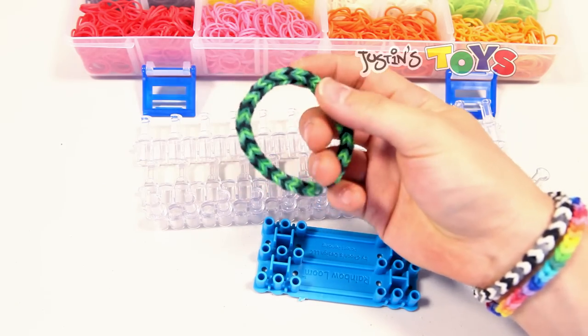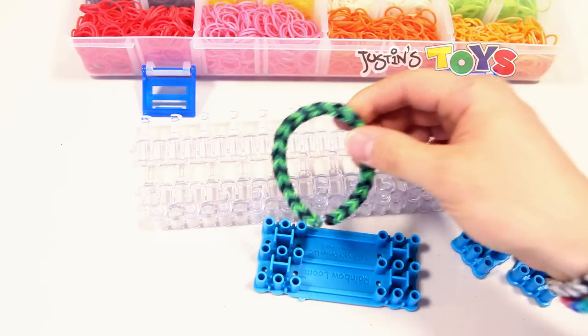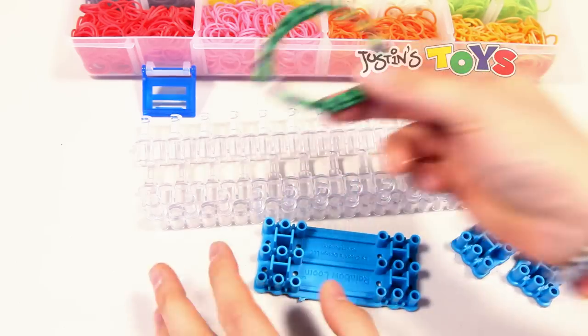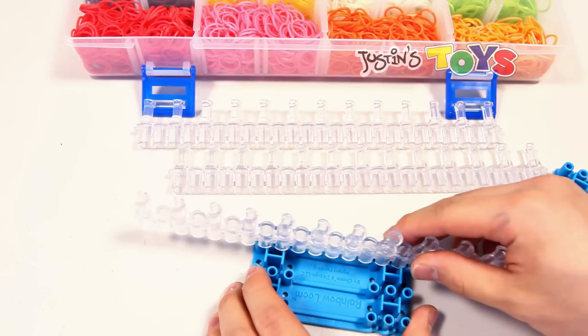This is a little bit thinner than the hexafish, but it's thicker than the regular fishtail. And the easiest way to make this is to take your loom and connect it like so.